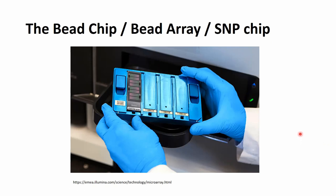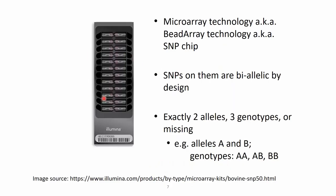SNP chips have multiple names: bead chip, bead array, SNP chip, microarray — all basically meaning the same thing. One thing common to all of them is that the SNPs selected on them are biallelic by design. For example, there is allele A and allele B, giving three possible genotypes: homozygous AA, homozygous BB, and heterozygous AB.